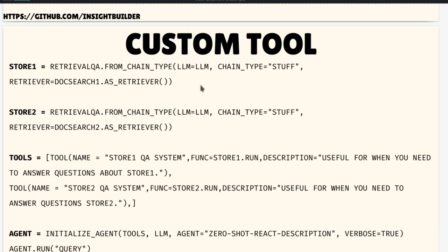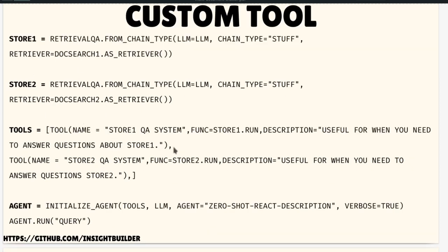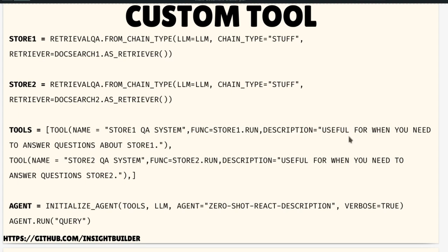Here is the custom tool setup. Store one is created from the RetrievalQA class using doc_search_one as a retriever, and store two uses doc_search_two as a retriever. The `as_retriever` method helps the RetrievalQA chain and the LLM work with the vector store. We create two different RetrievalQA stores, then use them as tools inside the chain with a proper function and a description telling what each store is useful for. Then we initialize the agent on those tools and run the query directly.